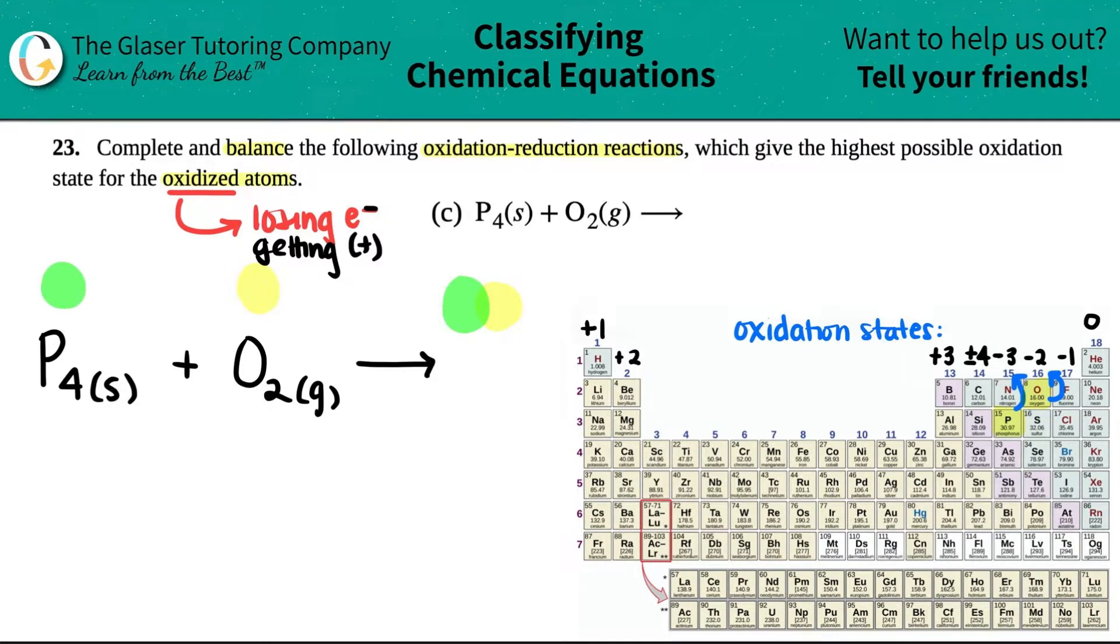Uh-oh. It looks like they both want to be negatives. That cannot happen. One has to be the positive. One has to be losing electrons. One has to be oxidized and the other one has to be reduced. Which one is it going to be? The rule here is that the more electronegative atom is going to be negative or become a negative charge when it binds with somebody else when it makes a compound.